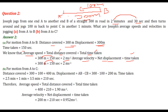Now for A to C: the distance is 300 plus 100, that is 400 meters. What is the displacement? 300 meters going forward and 100 meters coming back, so we subtract: 300 minus 100 equals 200 meters is the net displacement.